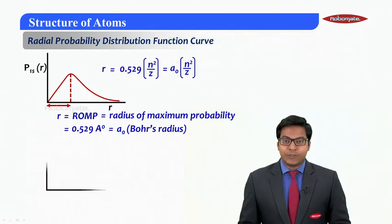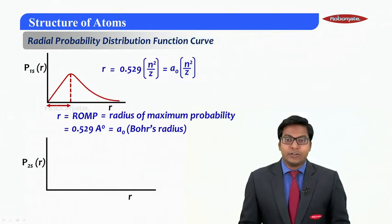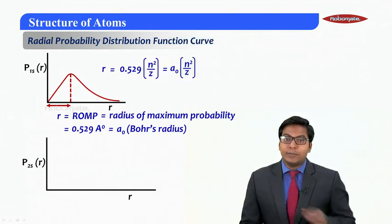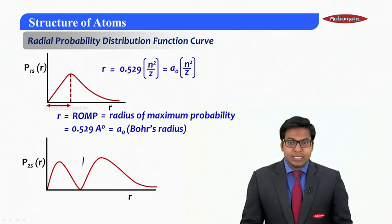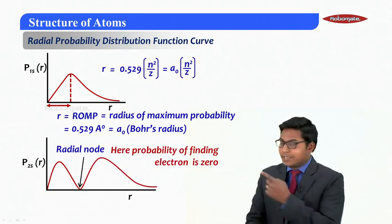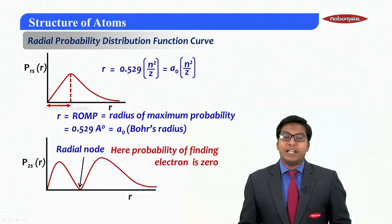From the graph it is evident that the probability of finding electrons at nucleus and at infinite distance from the nucleus is always zero. Now let me draw a similar graph for 2s. This is the graph you will get. Now here we are getting a radial node where the probability of finding electron is zero.